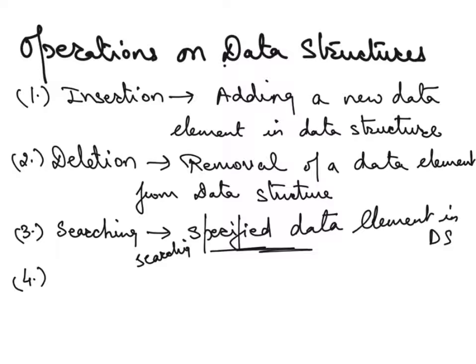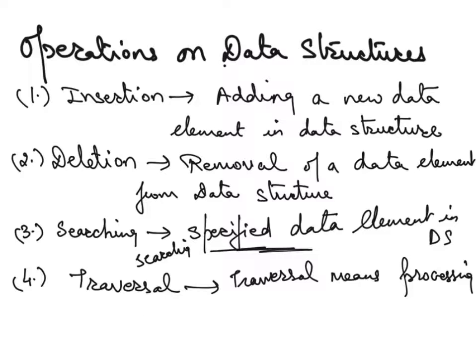Then the fourth one is traversal. When we talk about this, it means processing all the data elements of it one by one. Traversal means one by one, you are traversing. So traversal means processing all the data elements—can you see here, all the data elements of it one by one.